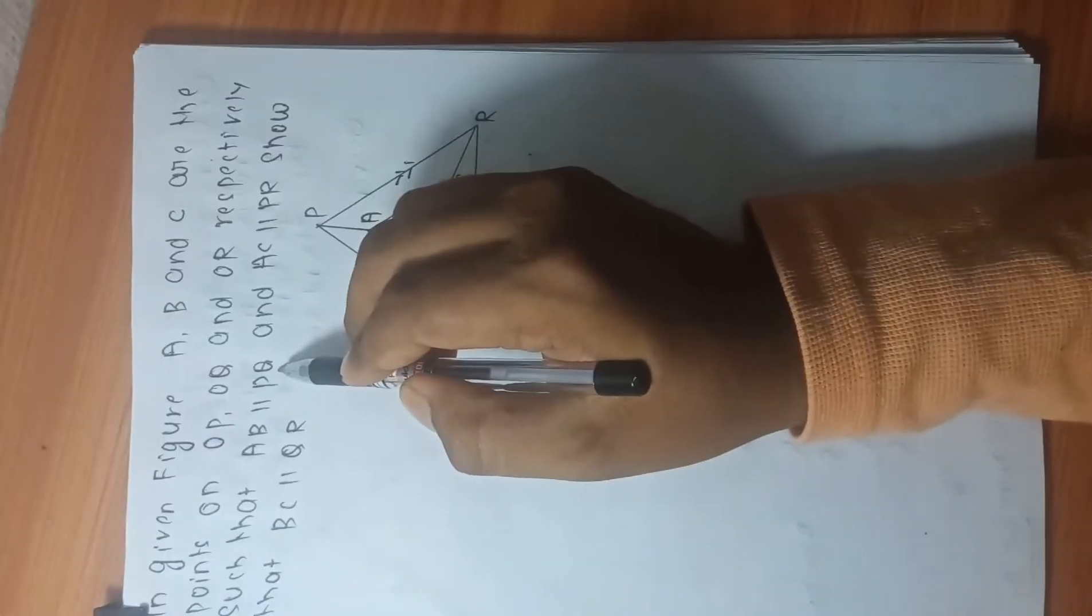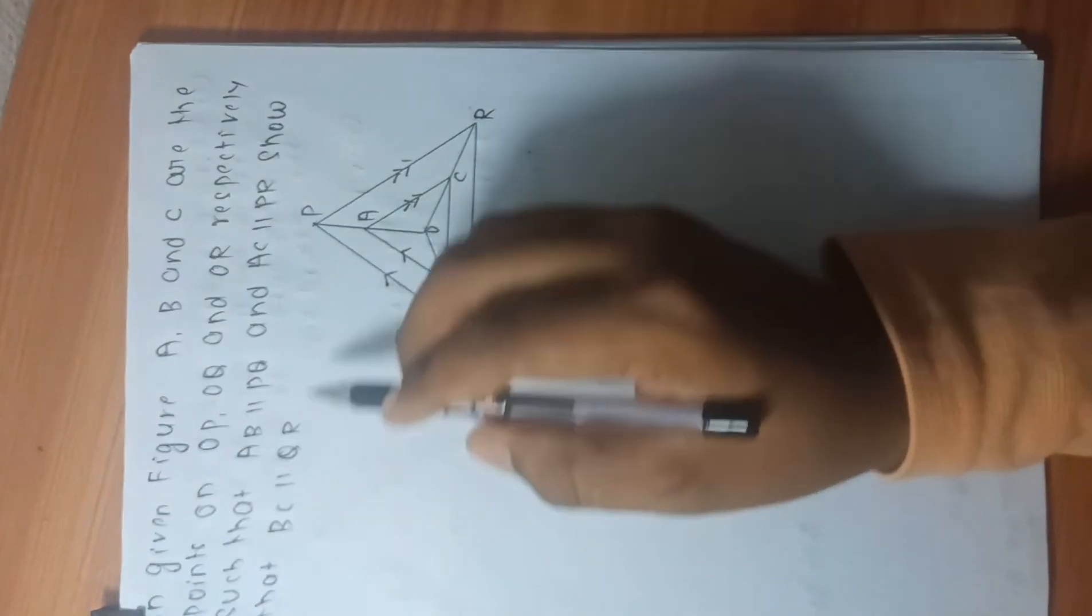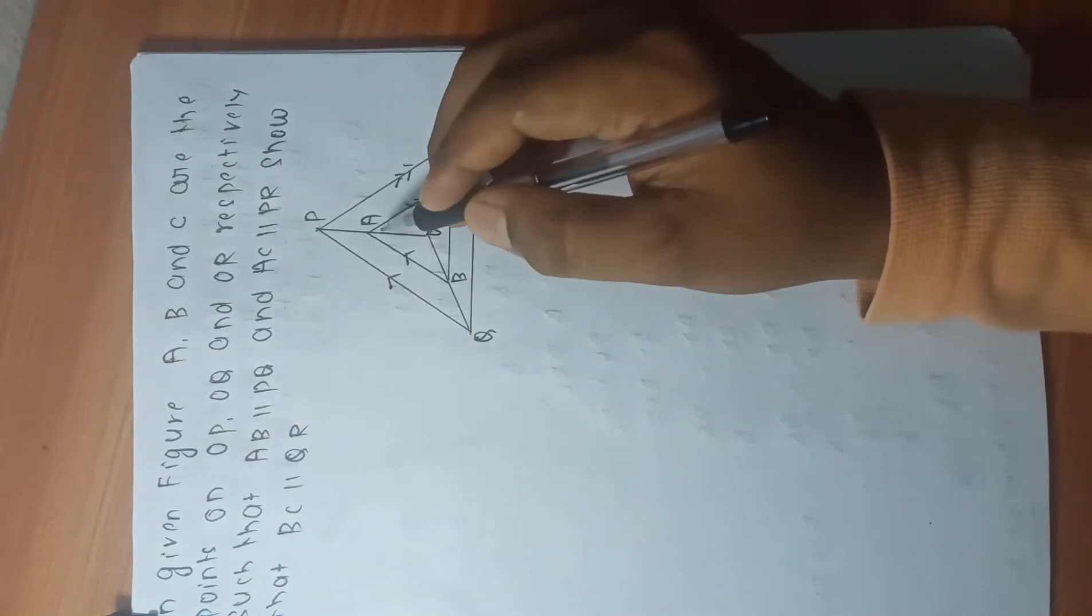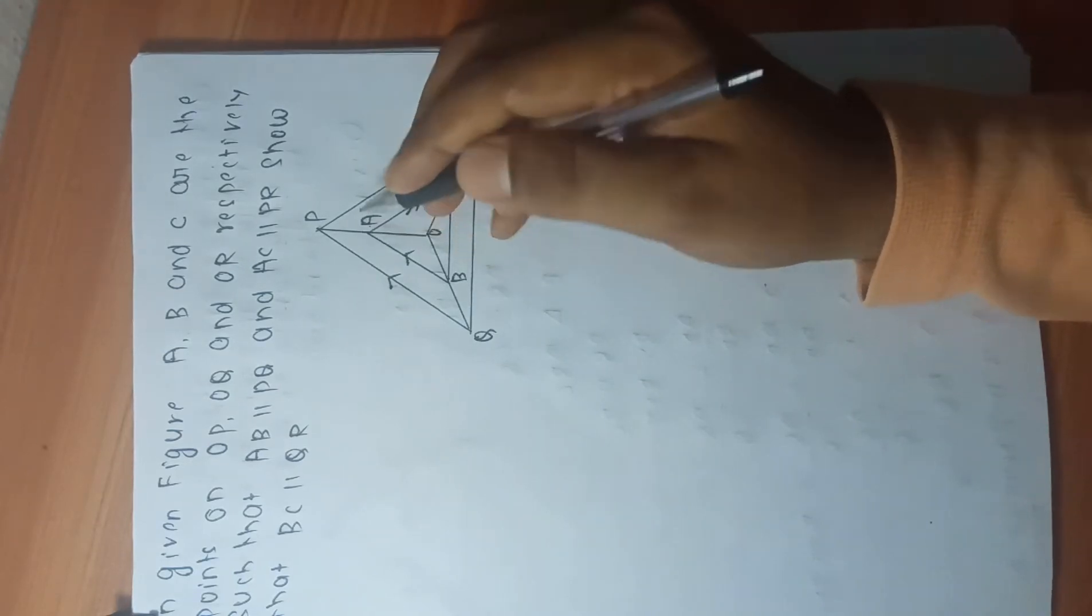AB parallel to PQ and AC parallel to PR such that BC parallel to QR. PQR is the triangle, and in the given figure you can check AB is parallel to PQ.